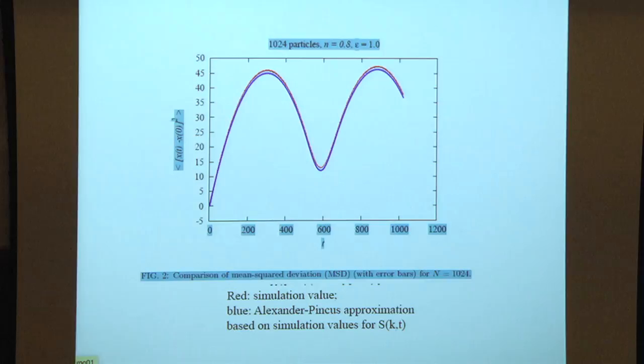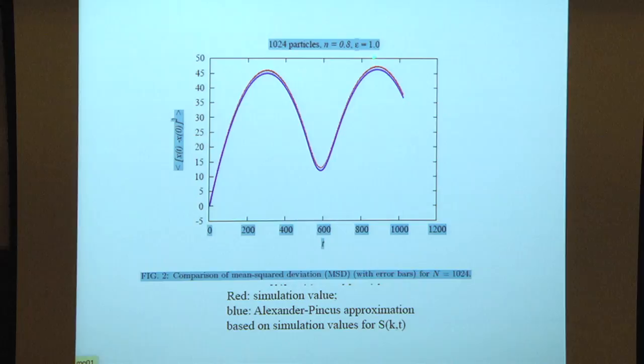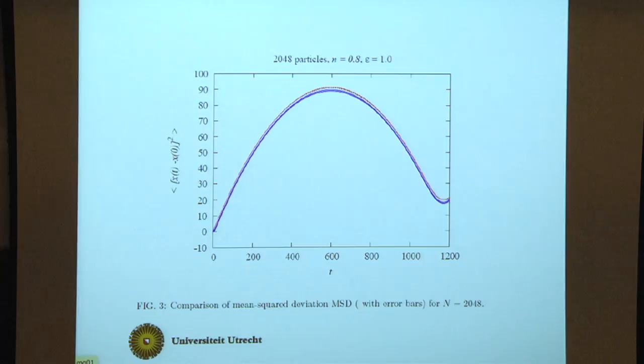Here are simulation results of Harald Posch for a bit over a thousand particles at given density and energy. The red curves are the simulation results. The blue curve is the prediction based on the Alexander-Pincus expression but based on simulation values for S(k,t). They follow each other perfectly, but there's a constant offset between the red and blue curves due to oscillations of a tagged particle around its average position. Alexander-Pincus really describes the mean square displacement of this average position from its initial value.